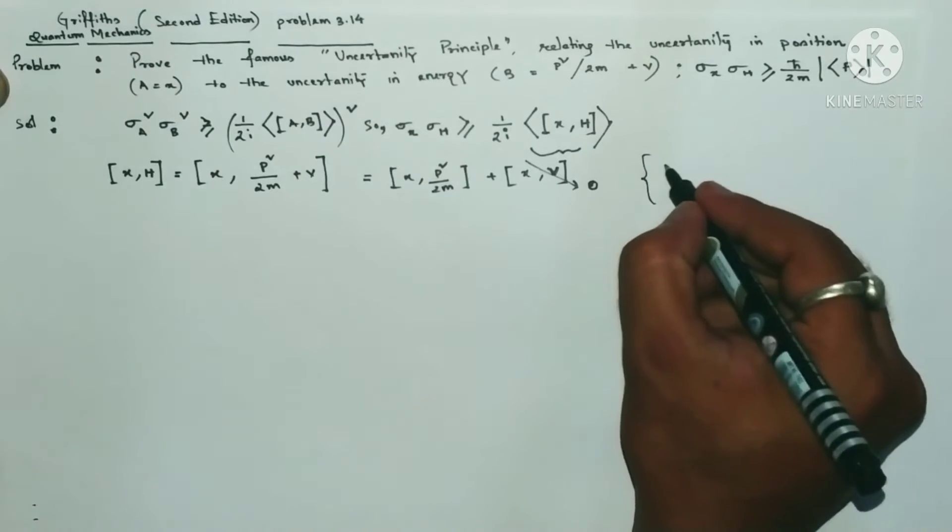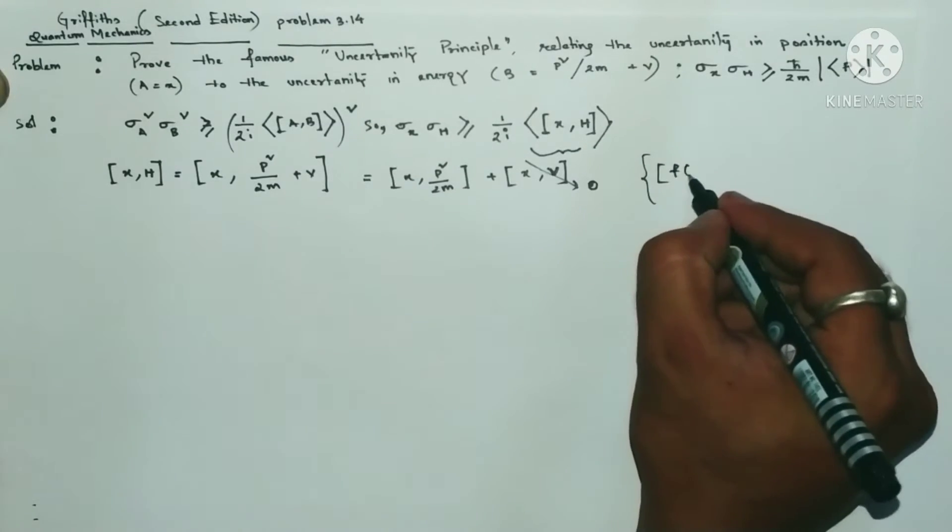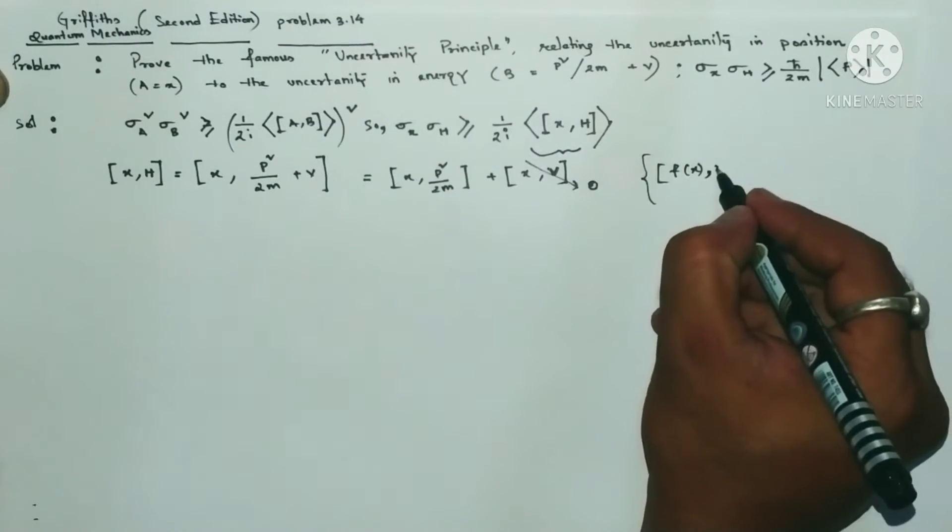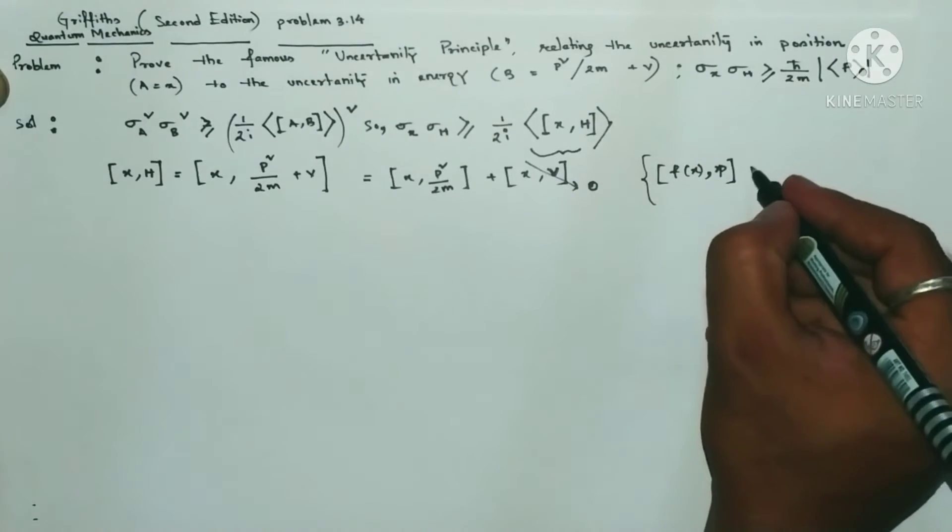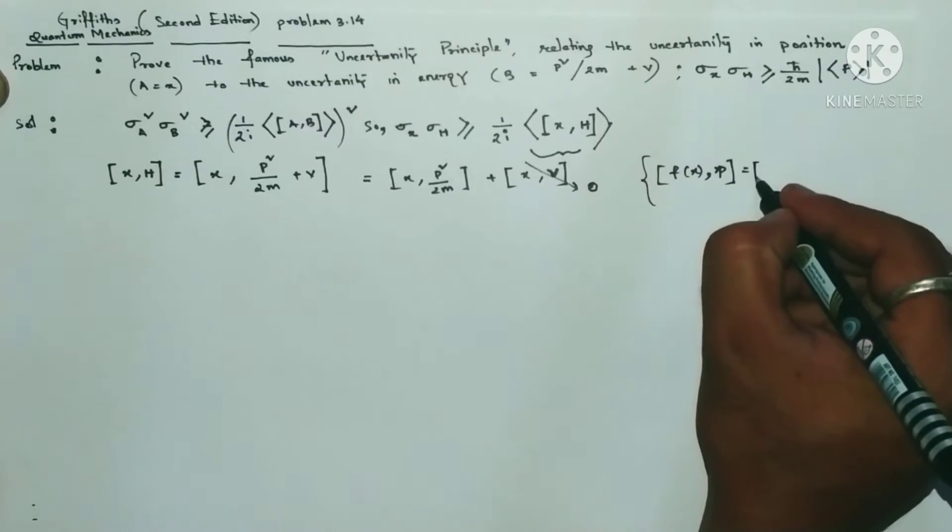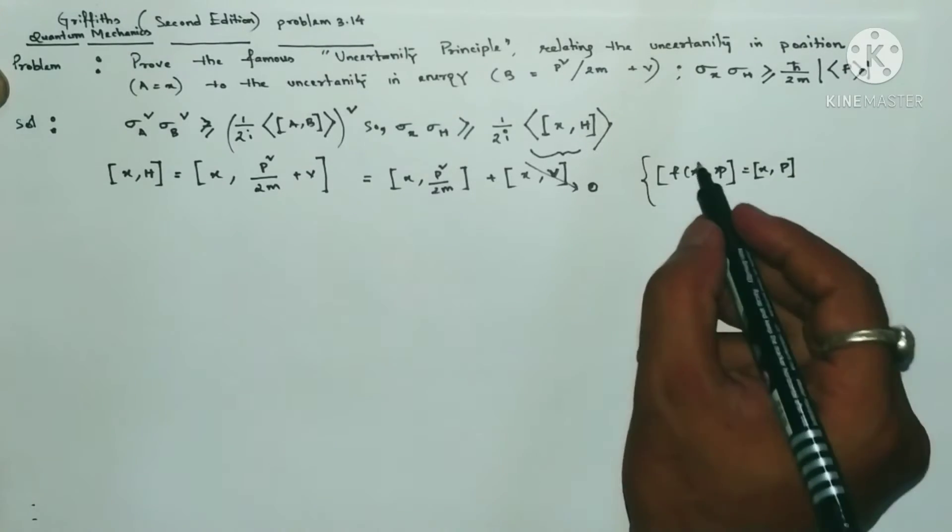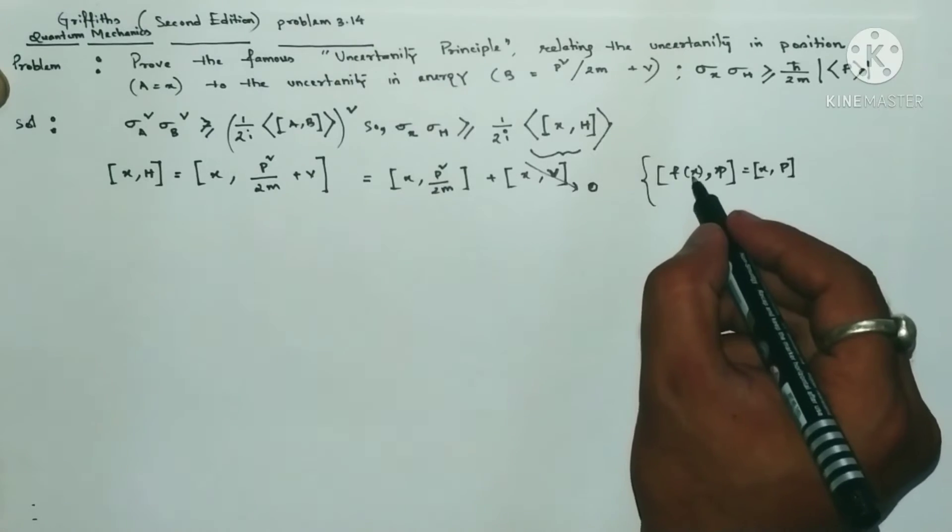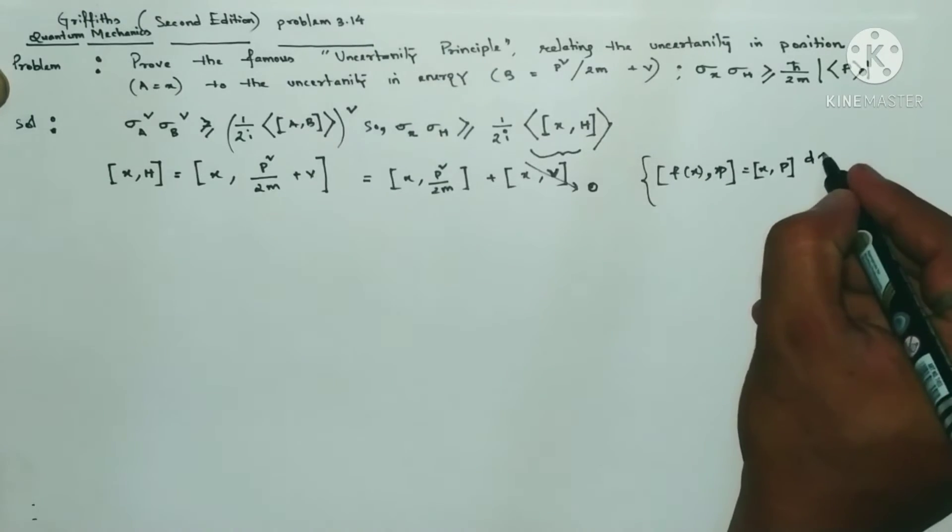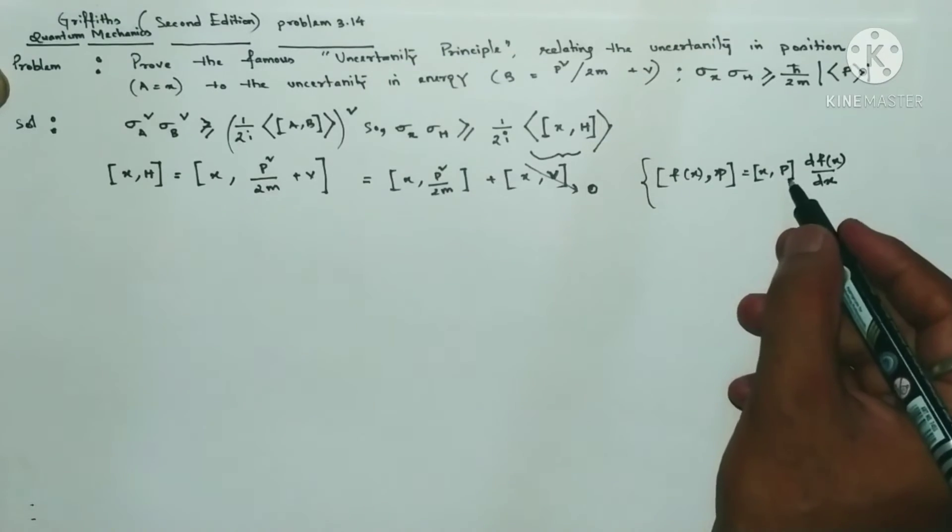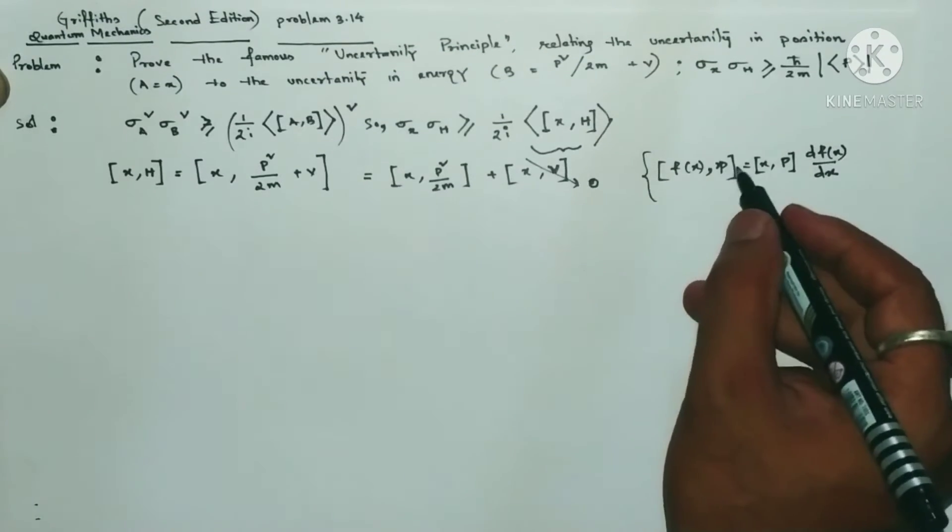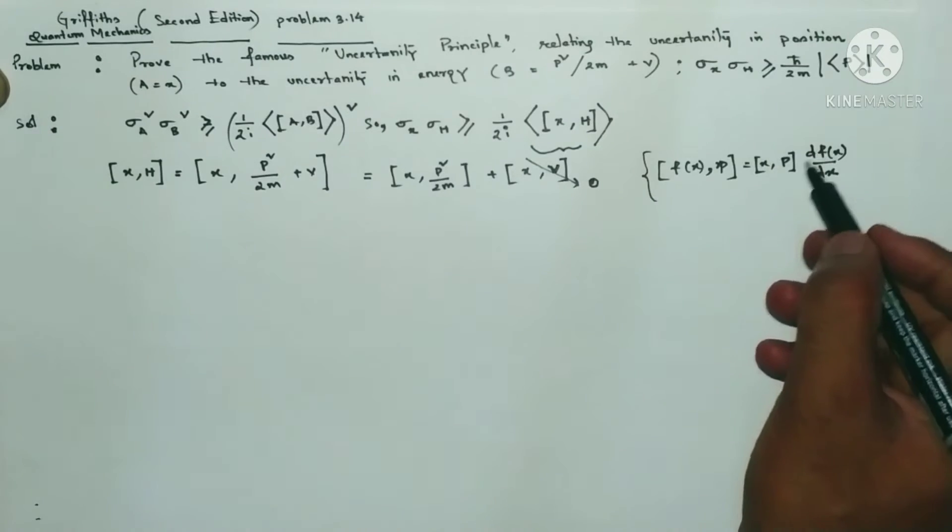One more thing: suppose we have a function of X comma X or comma P, then this will be equal to the commutator of X comma P, and the function will be differentiated with respect to P. If it is a function of P, then it will be X comma P commutator and the function of P will be differentiated with respect to P.